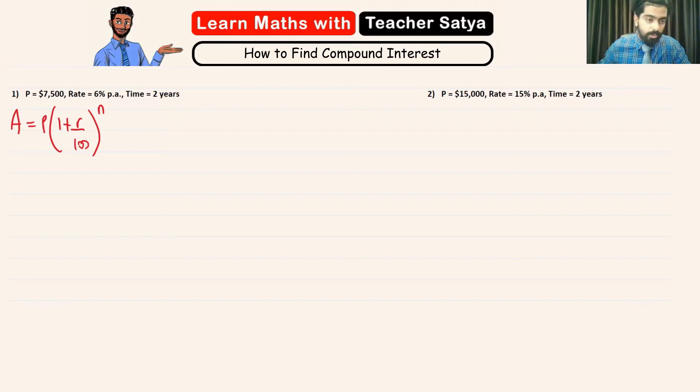Now, in question number one, we see that the principle is 7500 multiplied by 1 plus the rate is 6 over 100 to the power of n, which is 2 years. Now, let's go ahead and solve inside the bracket first.